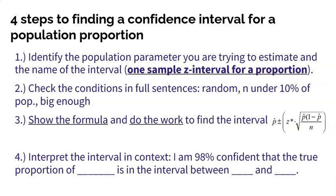First, you need to identify the population parameter that you're trying to estimate and the name of the interval. For this video, we're talking about a one sample z-interval for a population proportion.